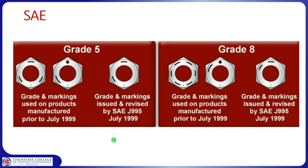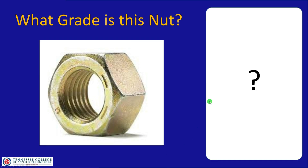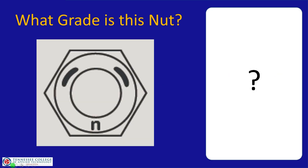Nut markings are harder to see and not all nuts have them. A quick way to identify standard nut grades: a grade 5 nut has two marks 90 degrees apart, while a grade 8 nut has two marks lined up with two adjacent flats — basically close together. Think of it as: close together is grade 8, further apart is grade 5. A nut with marks close together is grade 8; one with marks on adjacent flats with space between is grade 5.